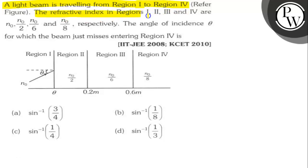The refractive index in regions 1, 2, 3 and 4 are n0, n0 by 2, n0 by 6 and n0 by 8 respectively.